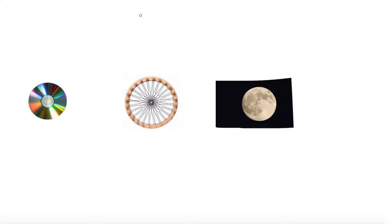Let us talk about an object which we come across always in our day-to-day lives. Such shapes are known as circles. We'll be seeing what circles are, how we define them, what are the basic terminologies related to that, properties, and everything about circles starting from this chapter.